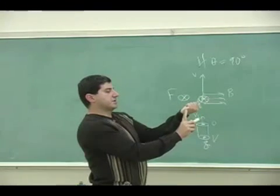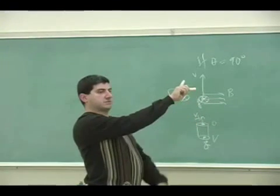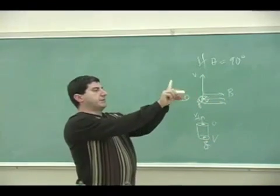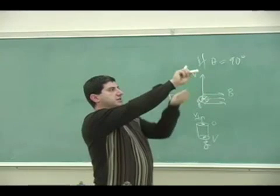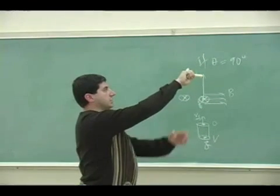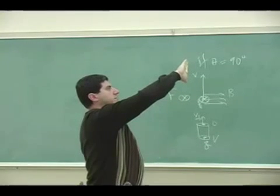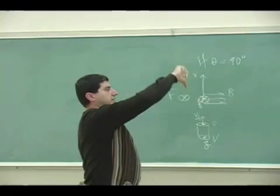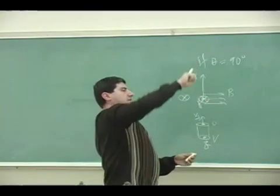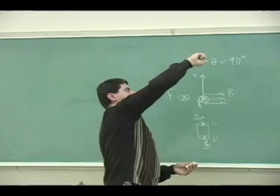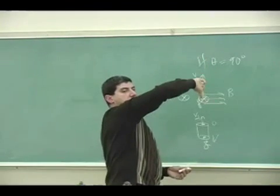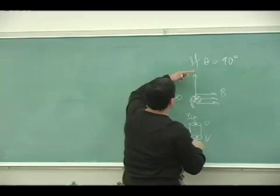So what's going to happen? It's going to start bending like that. You see, it's going to start bending into the board. And by the time its velocity is like this, what's the force going to be? So V crossed into B like this, and then when it eventually starts going like this — V crossing B down — it's going to go like that.